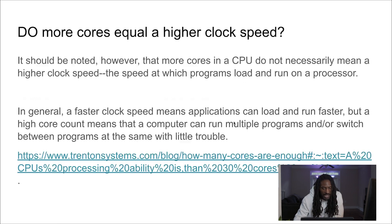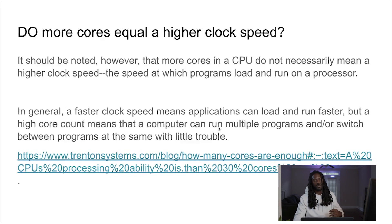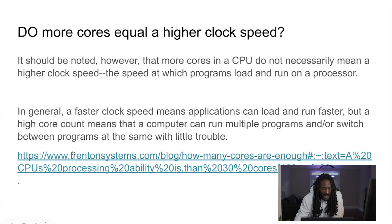More cores don't always equal higher speed. In general, faster clock speeds mean applications can load and run faster. A high core count means the computer can run multiple programs and switch between running programs at the same time, but it doesn't necessarily mean everything will load faster. You'll be able to load more things more efficiently than if you didn't have as many cores.